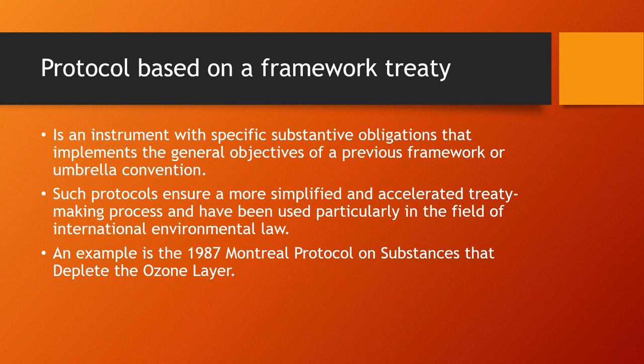Then we have protocols based on a framework treaty. This is an instrument with very specific substantive obligations that implements the general objectives of a previous framework or umbrella convention. An example is the 1987 Montreal Protocol, which was introduced for the convention on substances that deplete the ozone layer. Such protocols ensure a simplified and accelerated treaty-making process and have been used particularly in the field of international environmental law.